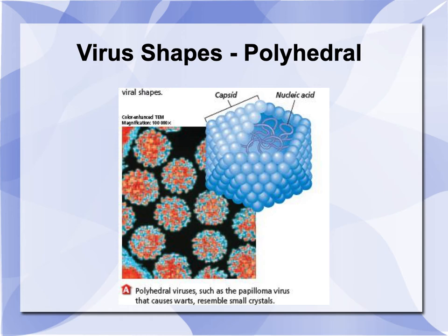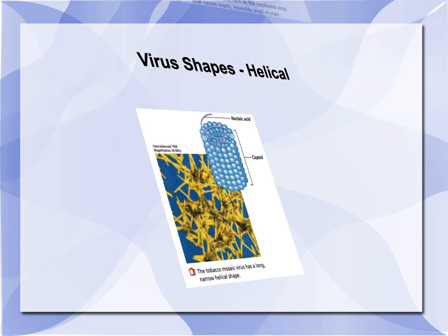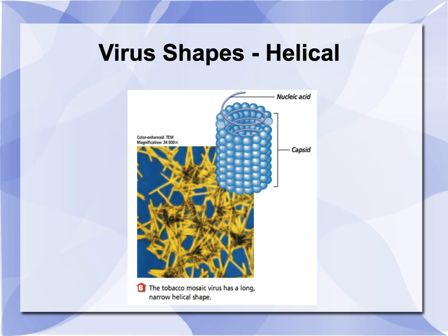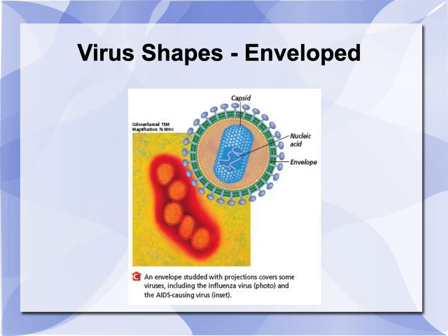Viruses come in a bunch of different shapes. They can be a polyhedral shape, meaning they look like dice if you play Dungeons and Dragons — 20-sided, 12-sided, 8-sided, etc. They can be helical; rabies virus was our example, and the picture there is tobacco mosaic virus. And they can be enveloped — that is flu, and also HIV is enveloped.